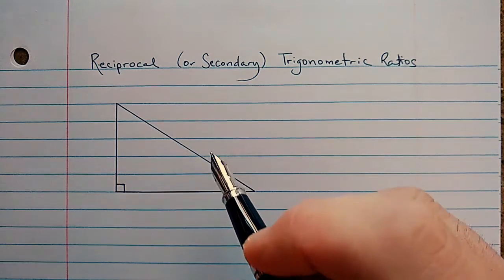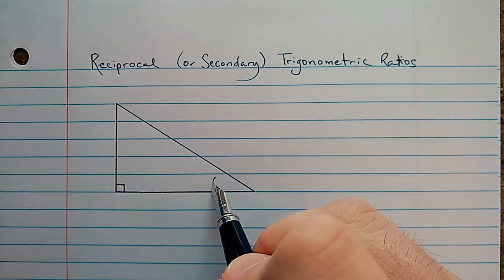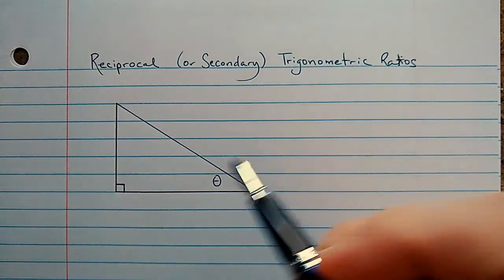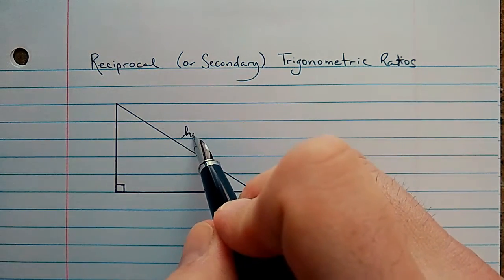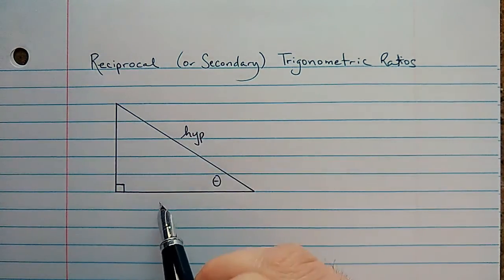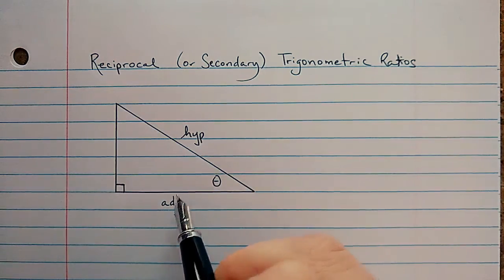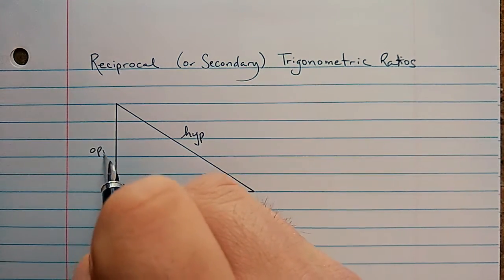Let's first review the primary ones. I'm going to put an angle in here, call it theta. So from this reference angle theta, we have the hypotenuse over here, the adjacent side is this one, and the opposite side is over here.